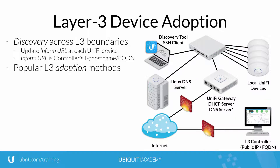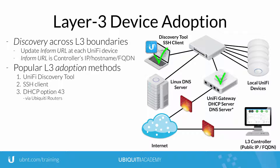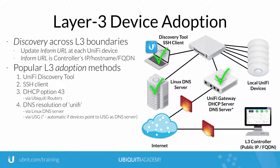There are four methods for updating a Unify device's Inform URL for the purpose of remote management, including Unify Discovery Tool, SSH Client, DHCP Option 43, and DNS Resolution.